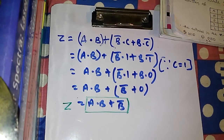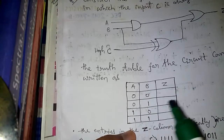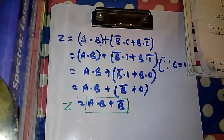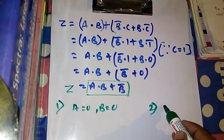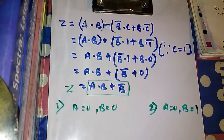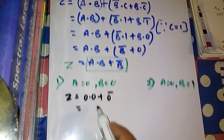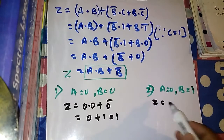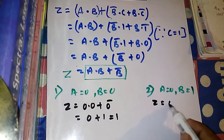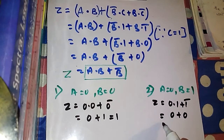Now we evaluate the four conditions. For condition 1 (A=0, B=0): Z = 0·0 + 0̄ = 0 + 1 = 1. For condition 2 (A=0, B=1): Z = 0·1 + 1̄ = 0 + 0 = 0.